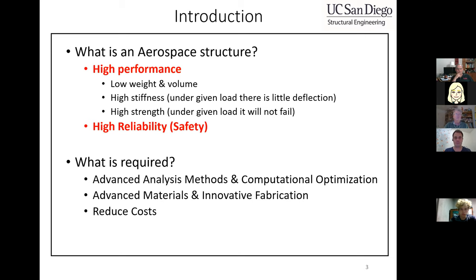High strength means we're obviously trying to make a very strong, safe, and very lightweight structure — that's where composite materials come in. High stiffness means you don't want the structure to deflect, or you want it to have a very high natural frequency. To design or build or work in this field, you need advanced analysis methods, computational optimization, a lot of computer simulations, and advanced materials. We're always trying to develop new materials — aluminum, titanium, and carbon fiber were all developed for the aerospace industry. Originally very high cost, but their costs have been reduced, and as Professor Restrepo mentioned, these materials have made their way into civil engineering structures, reducing weight and thus reducing seismic loads.